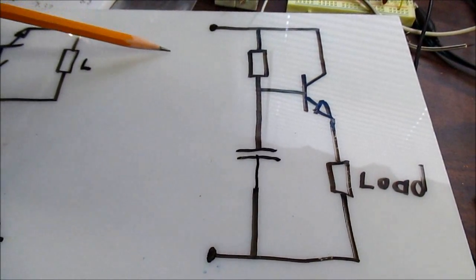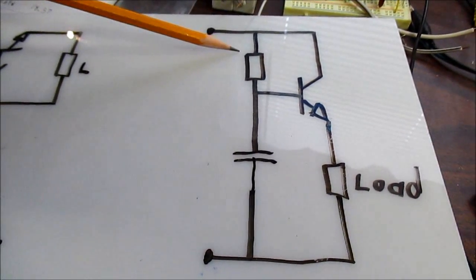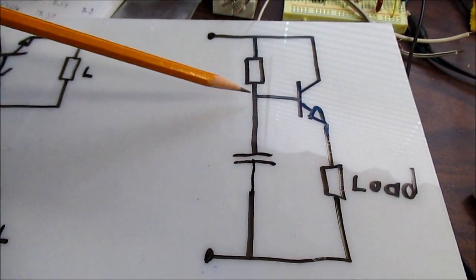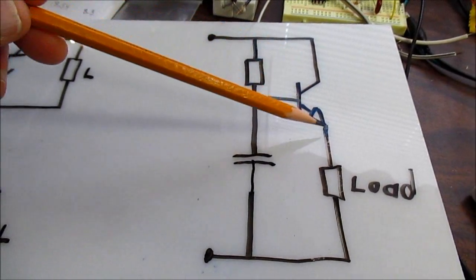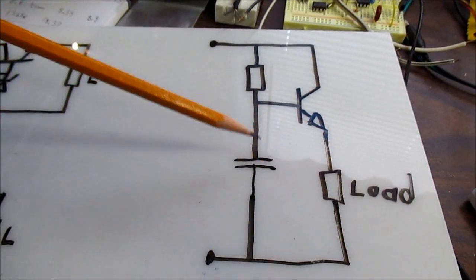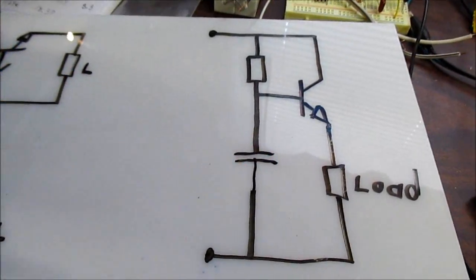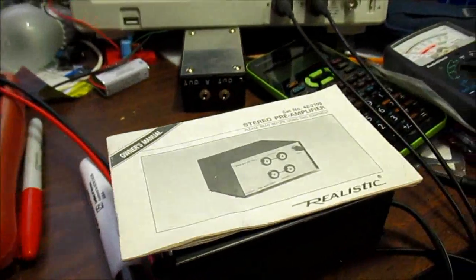So if you have a sag on your supply voltage, what happens, it drops below this, the capacitor's voltage, and hum will go through the circuit because this is not filtering anymore. And a good example of that problem is my realistic RadioShack brand phono preamp.